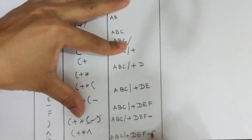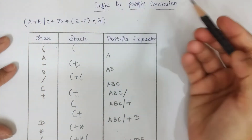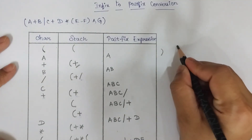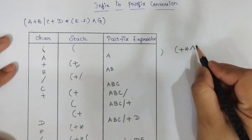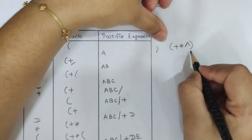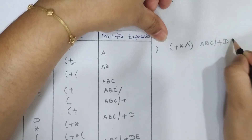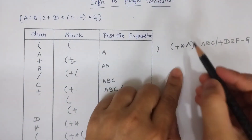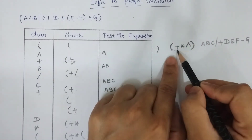Now the last character is close parenthesis. When you have close parenthesis, check the operators present between the close parenthesis and the immediate open parenthesis. Here we have three operators present in between the open and close parenthesis.